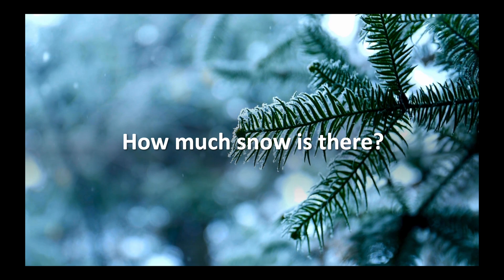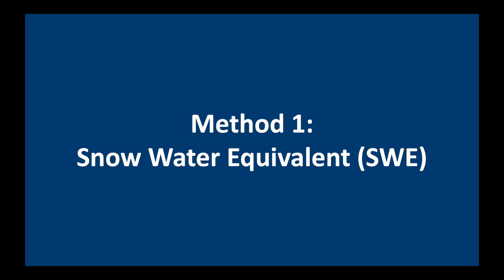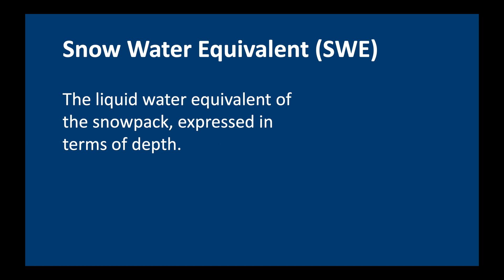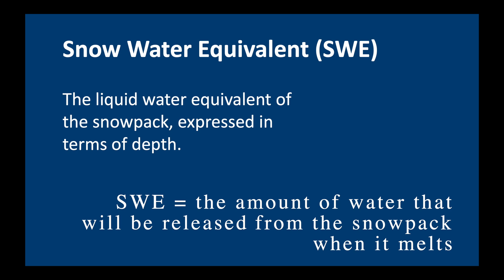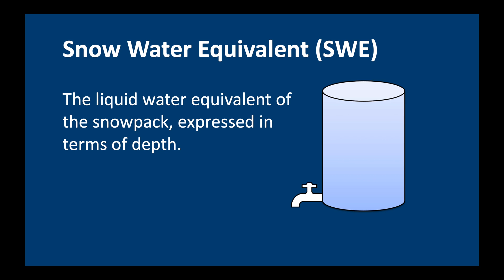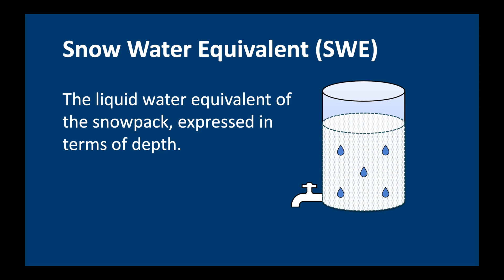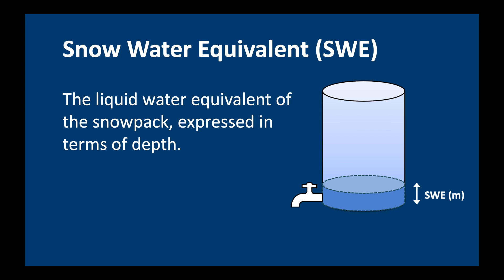The first method is Snow Water Equivalent, often abbreviated as SWE. The Snow Water Equivalent is defined as the liquid water equivalent of the snowpack, expressed in terms of depth. Basically, it is the amount of water that will be released from the snowpack when it melts. If we have a cylinder full of snow and the temperature rises above freezing, the snow will melt until all of it has turned into water — the depth of this water is called the snow water equivalent, expressed in meters over the land surface.